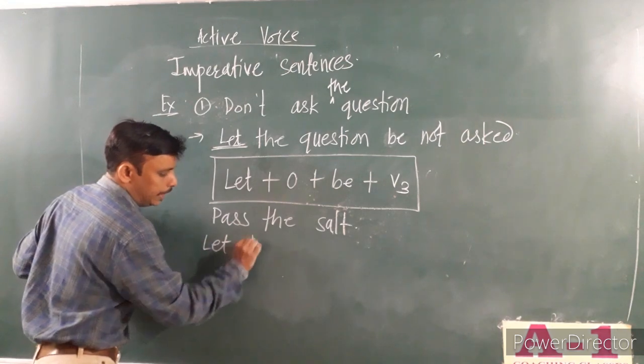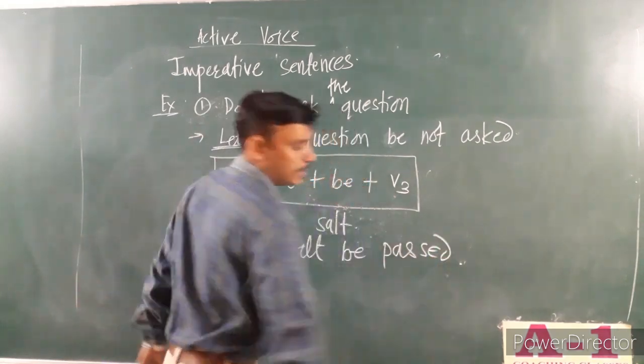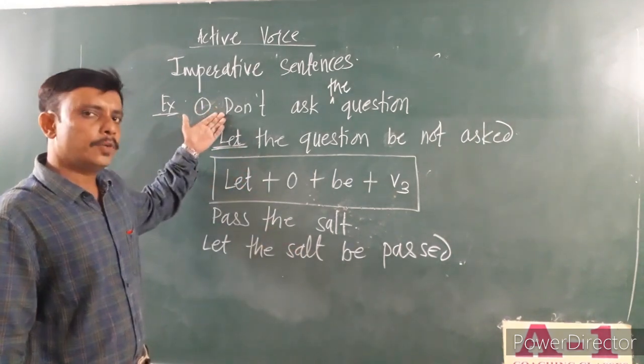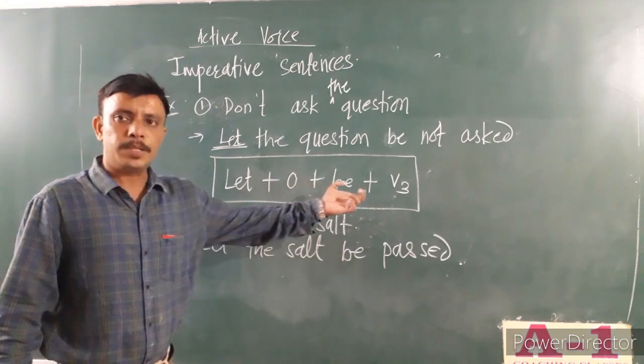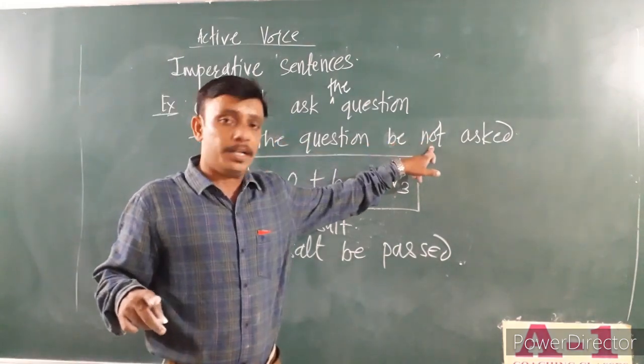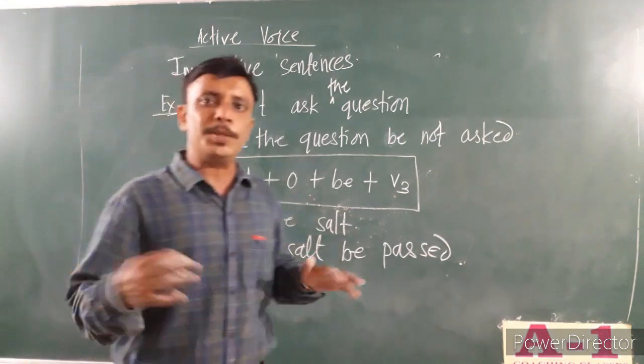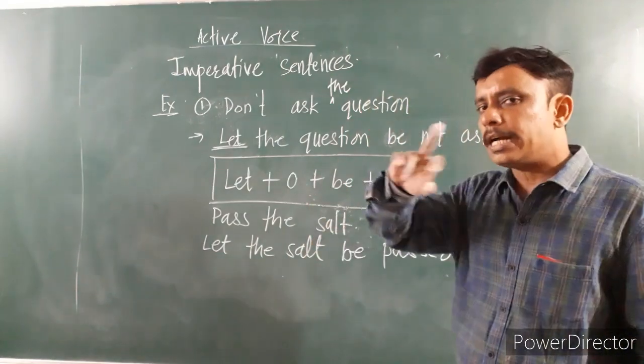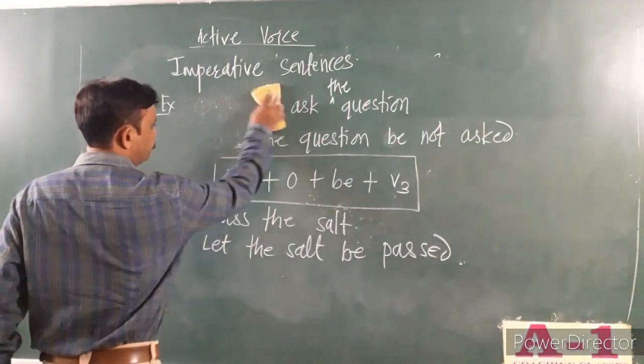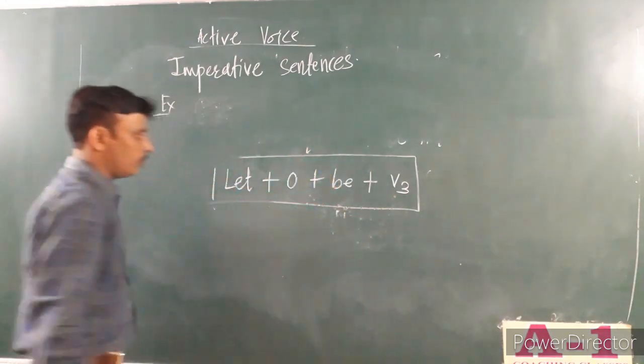Now another example: Pass the salt becomes let the salt be passed. This is the structure: let plus object plus be plus V3. But in case of negative sentences, the structure changes a little bit because after be you have to write not. Whenever there is a negative sentence. Then in case of the affirmative, positive sentence, you need not do anything special. Just start the sentence with let.